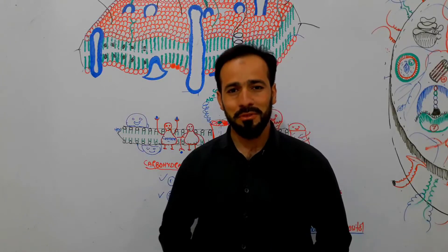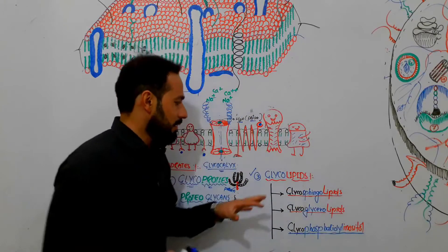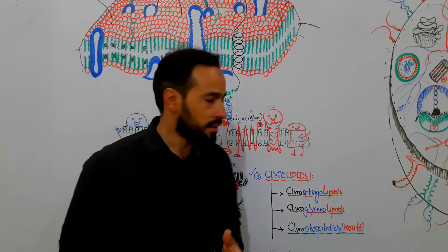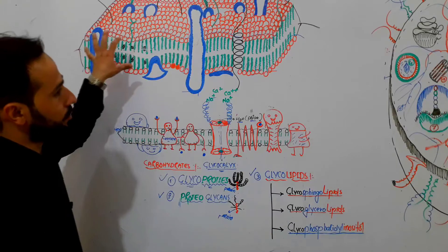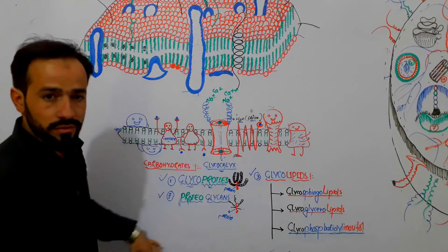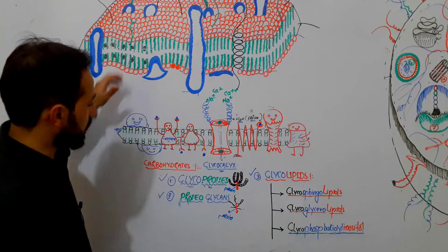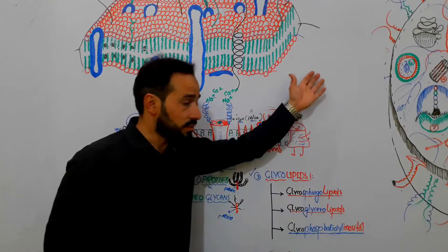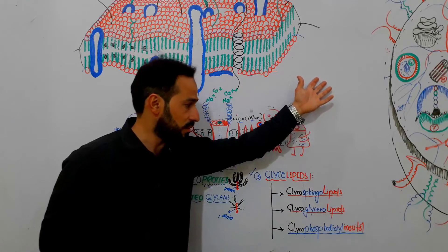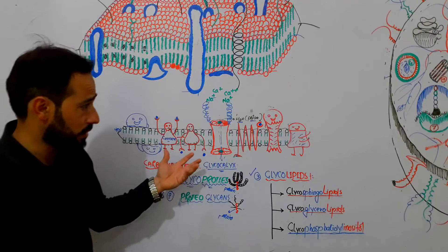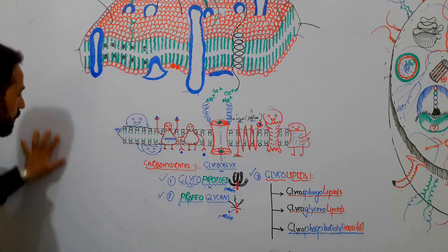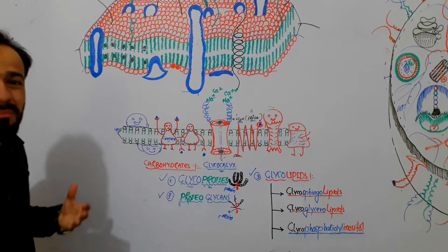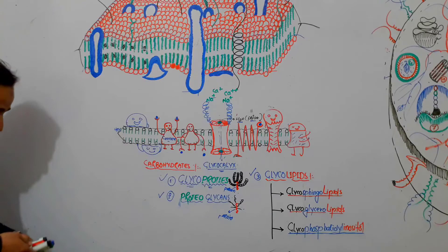Welcome back, dear friends. In this lesson we'll discuss some functions of the cell membrane. In previous lectures I have already discussed the structure of the cell membrane, the lipids present, the proteins found there, the carbohydrates and the functions of those carbohydrates and proteins. Now let us see the functions of the cell membrane — what this barrier is doing and what its function is.